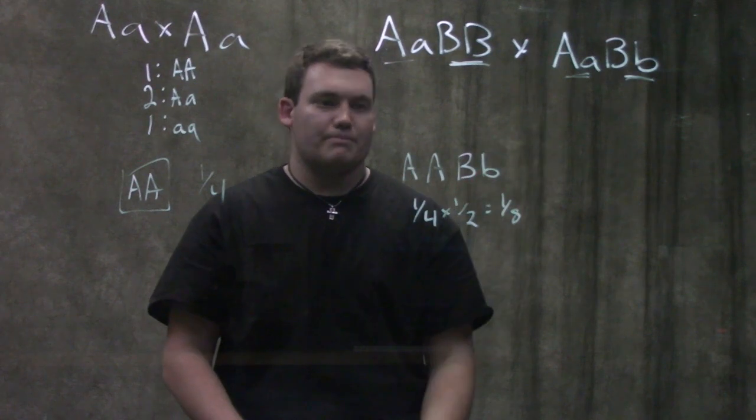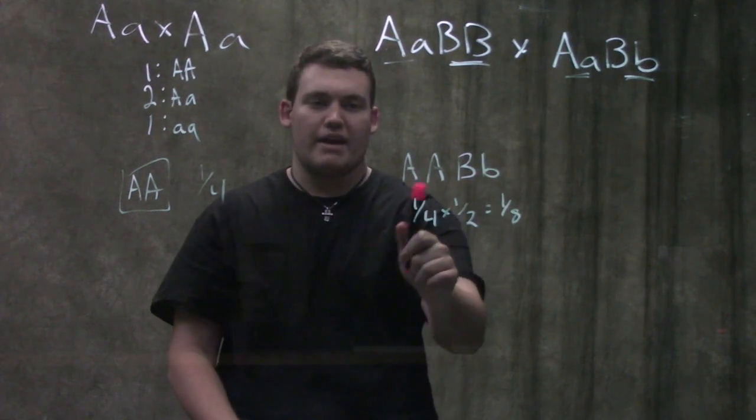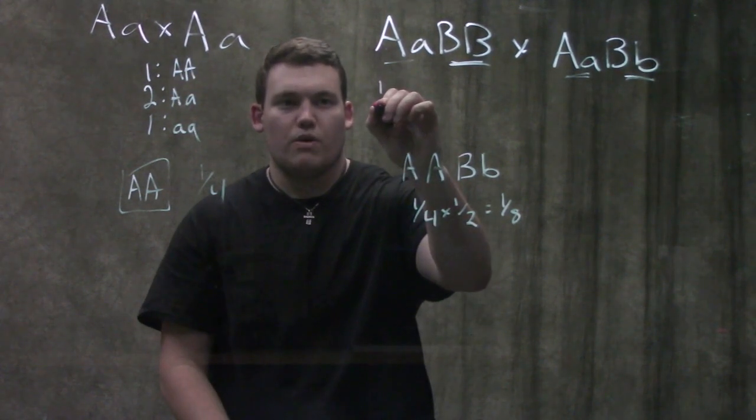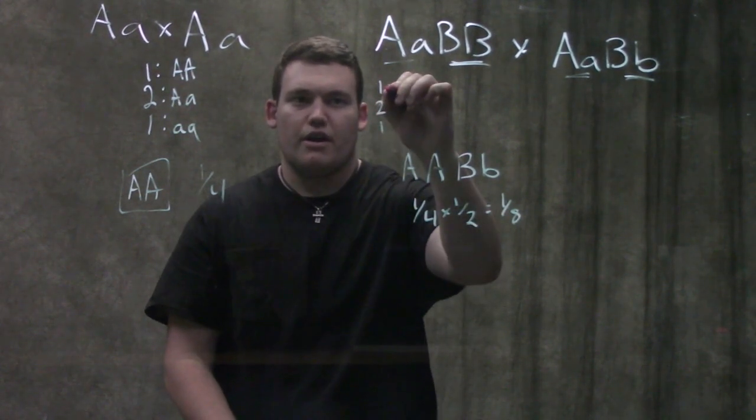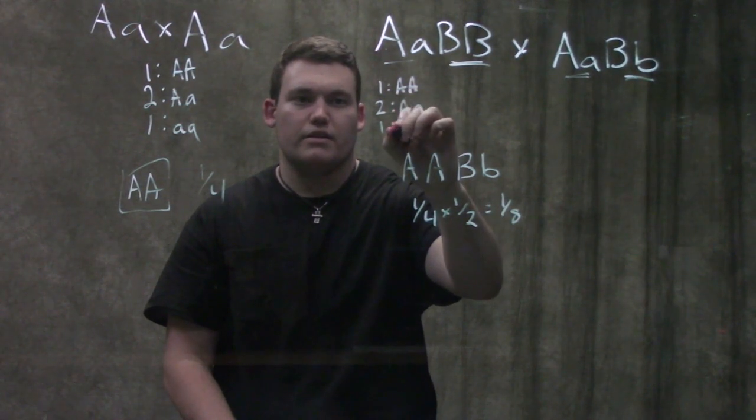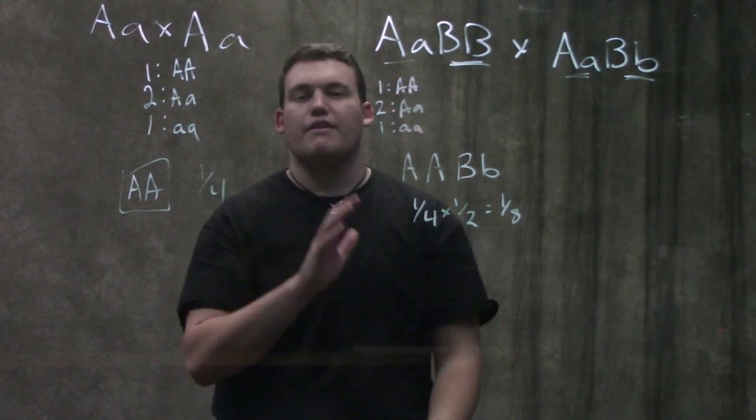Big A little a, big A little a. I want big A big A. Well, we're going to do that over here. It's a quarter because it is that one to two to one ratio of big A big A, big A little a, little a little a. You guys shouldn't have to be doing Punnett squares.